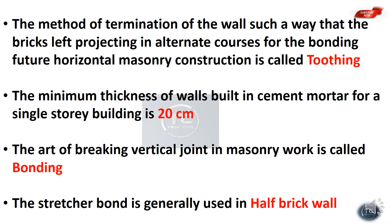The method of termination of the wall such that the bricks are left projecting on alternate courses for bonding future horizontal masonry construction is called toothing.